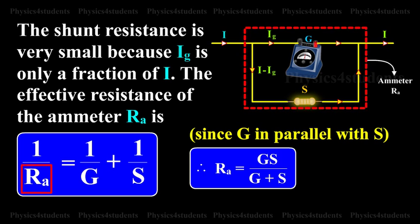RA is very low and this explains why an ammeter should be connected in series. When connected in series, the ammeter does not appreciably change the resistance and current in the circuit. Hence, an ideal ammeter is one which has zero resistance.